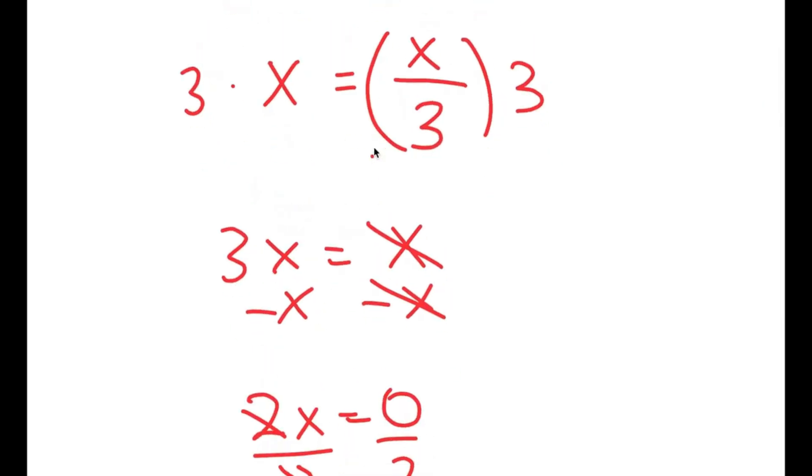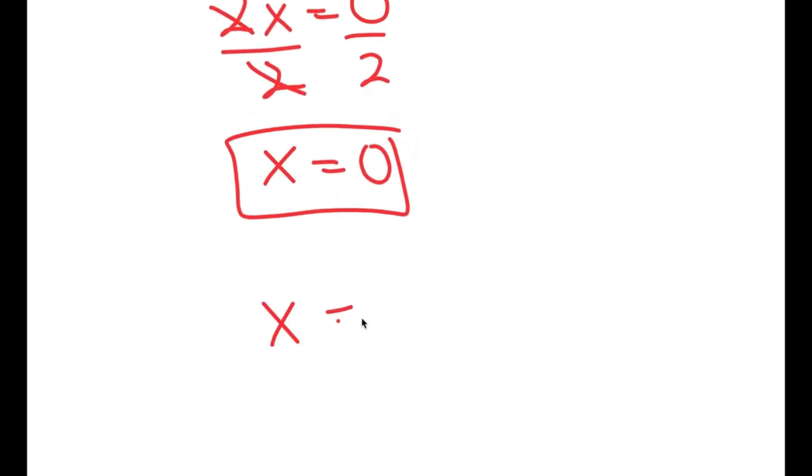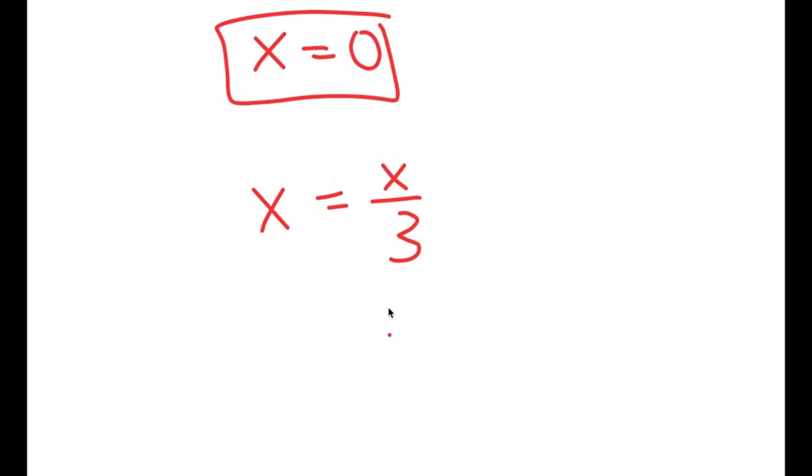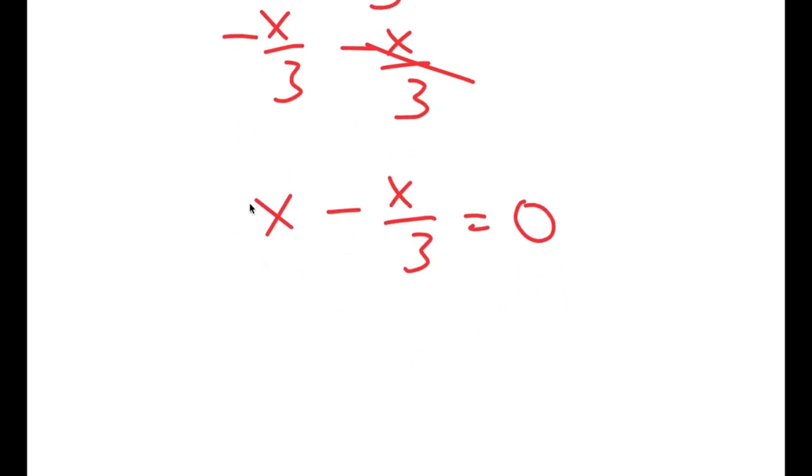Now, another way to solve this is x equals x over 3. I'm going to subtract x over 3 on both sides. So now I get x minus x over 3 is equal to 0. And now I'm going to multiply both sides by 3.